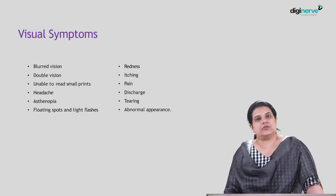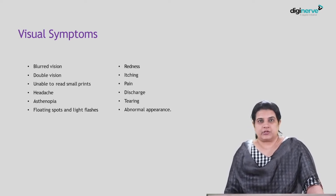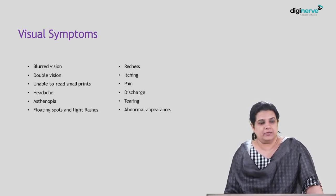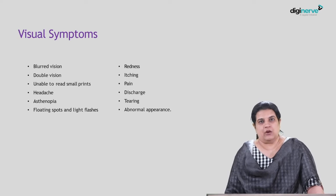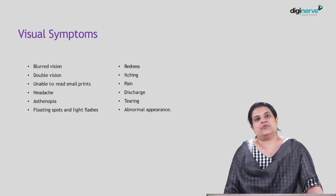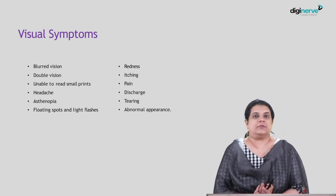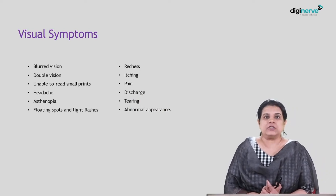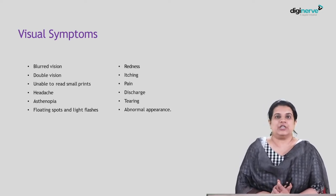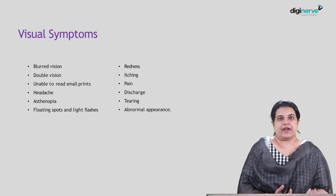Visual symptoms patients commonly present with include blurred vision, double vision (diplopia), inability to read small print (presbyopia), and crowding of letters while reading. Headache can be dull or sharp shooting — a dull boring headache could point toward benign idiopathic intracranial hypertension. Asthenopia means the patient feels visual exhaustion; for example, a patient working on computers 8 to 10 hours a day may have digital eye strain. Occupation gives a cue to causes of headache or asthenopia.